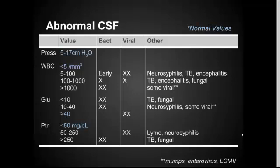Here is a reference table — something good to keep handy — compiled from a couple of textbooks and UpToDate. The normal values are highlighted in blue: pressure should be 5 to 17, white blood cells should be less than 5. If you have a severely elevated white blood count, you're thinking bacterial infection. I've also included less likely causes for each row under the 'other' category.